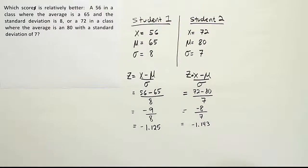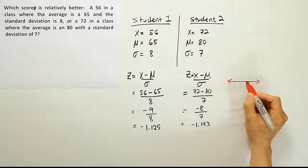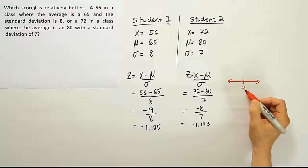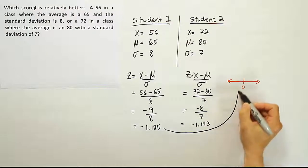So these numbers are pretty close to one another. They're not too far apart. But if we put them on a number line, we can see, putting 0 there in the center of the number line, we can see that negative 1.125, this value, would be here.